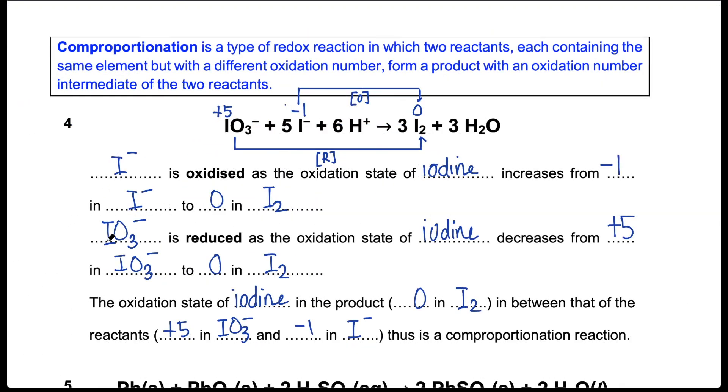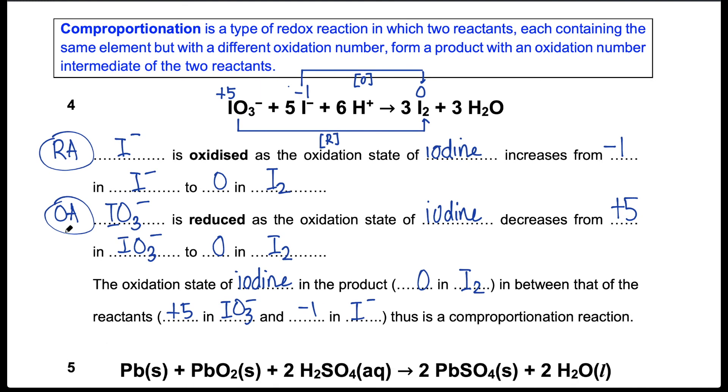Iodide ions cause iodate to be reduced. So iodide is the reducing agent and iodate is the oxidizing agent. Now pause the video and try the other two examples before I go through them with you.